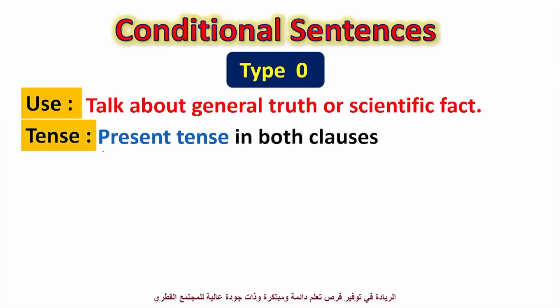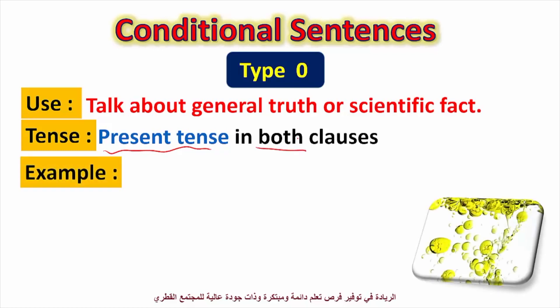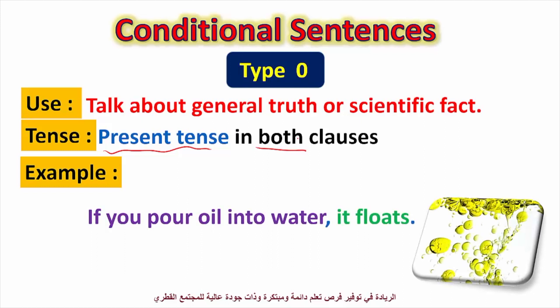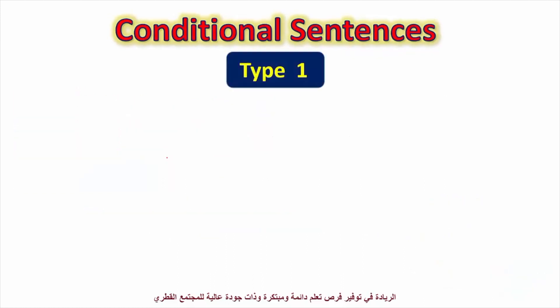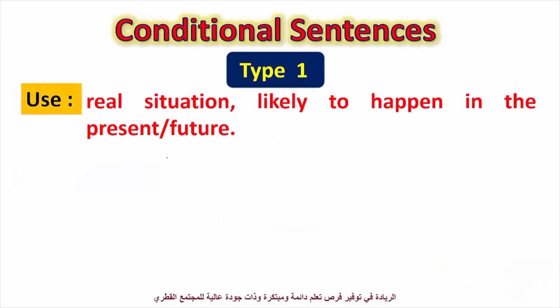For tense, we use present tense in both clauses — the if clause and the main clause. Example: 'If you pour oil into water, it floats.' Here we have 'pour' and 'floats' — both present simple tense. So in type zero we use present tense in both clauses.